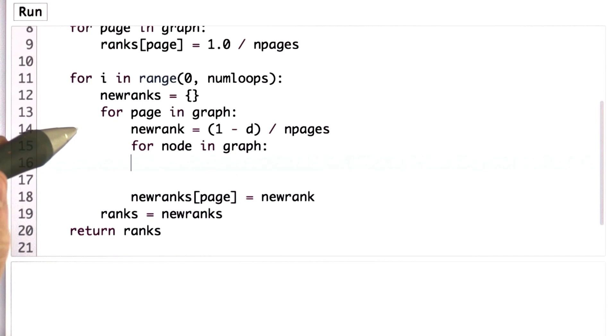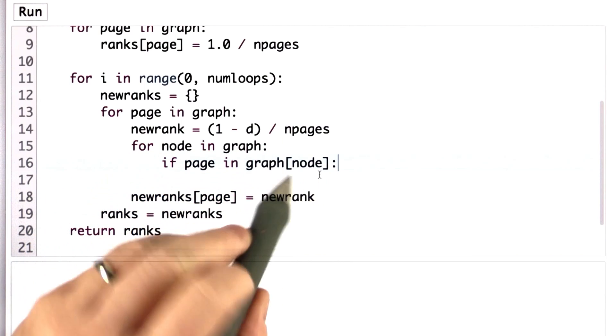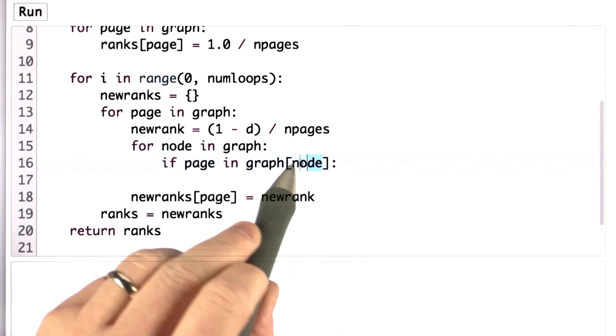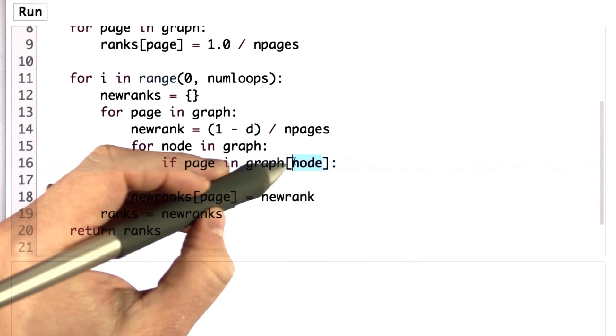And for each node, now what we need to do is check whether that page links to this one. So we're going to look in graph index node. That's going to get us the list of all the pages that node links to. If page is in that list, well that means that node links to page.